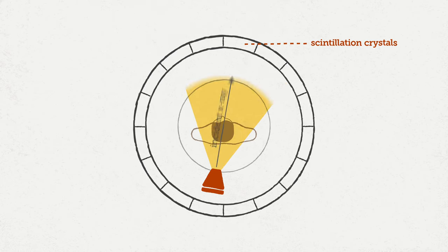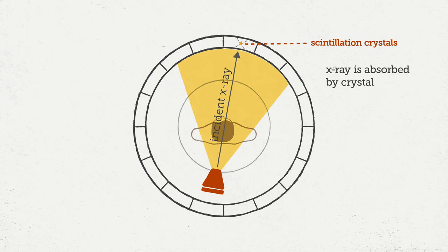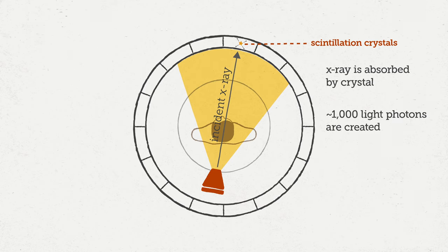Einstein was the first person who discovered these phosphors in the mid-1900s. But now we use pretty nice scintillation crystals such as cesium iodide or sodium iodide that will allow a lot of light photons to be created. So every time an x-ray is stopped by one of these scintillation crystals, about a thousand light photons will be created.